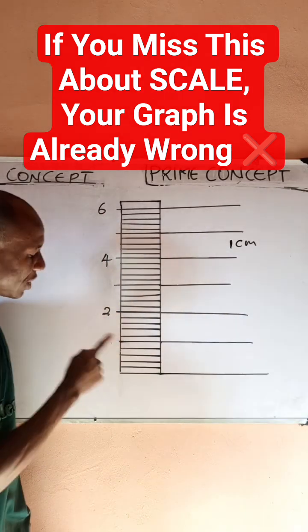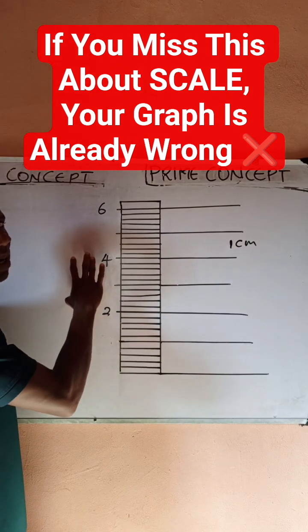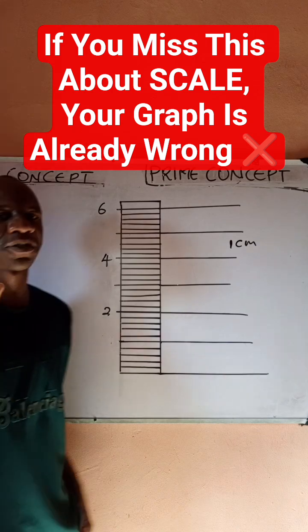So in this case, my scale would be 2 cm represents 2 units, because it's increasing by 2. So I believe that the concept of scale is very clear to you.